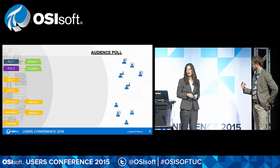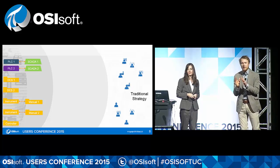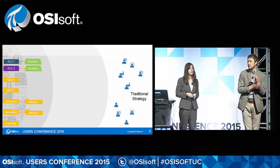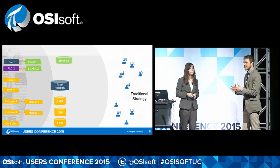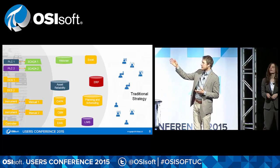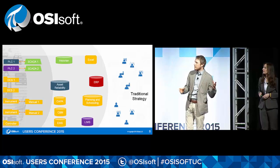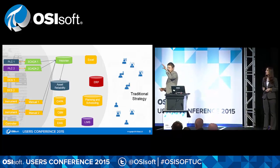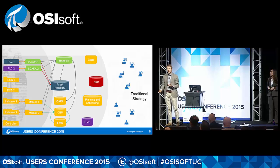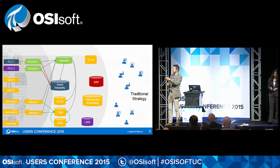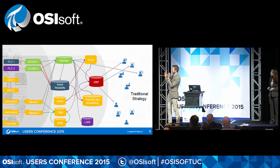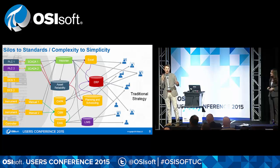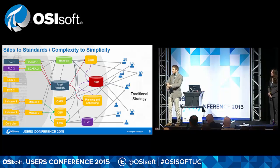This is the traditional strategy of how customers managed before they used the PI system. They had a lot of data sources and things they needed to do with it, and in between there were many systems: an asset reliability system, a historian to store data, a condition-based maintenance system. They moved data from source to historian, exported it to the asset reliability system, forwarded it to the condition-based maintenance system, and connected everything with custom-built solutions. The result is what one customer from Finland called the 'spaghetti strategy' — things are just everywhere.